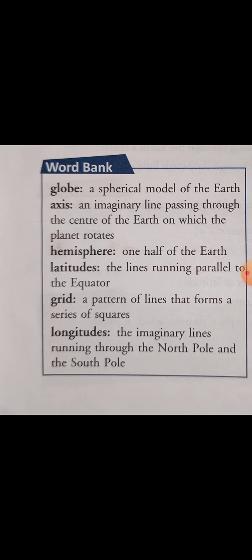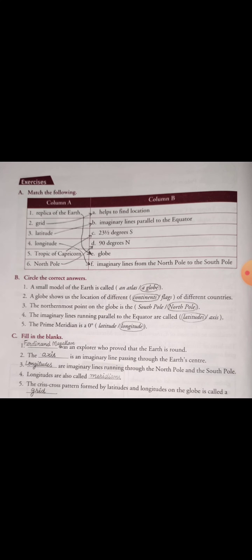Longitudes are imaginary lines running through the north pole and the south pole. Now we will move on to the exercises. The first exercise is match the following — replica of the earth. What represents the earth completely, showing countries and continents? That is the globe, so the answer is globe.